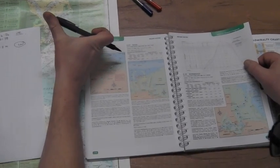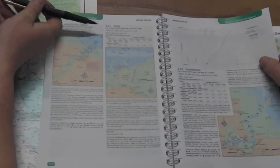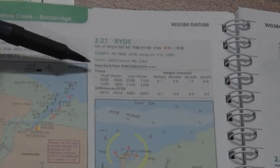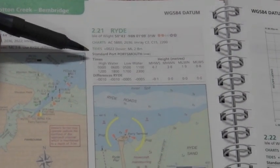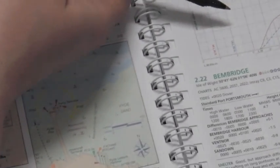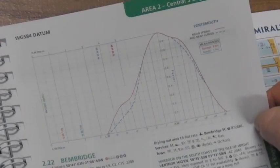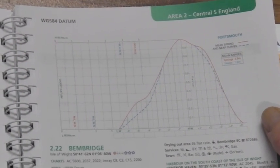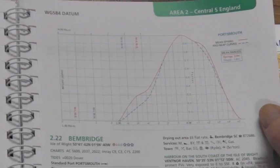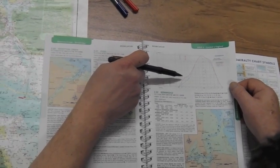We've got another useful bit of information here. It's telling us that the standard port for calculating the tidal heights is Portsmouth. And each standard port has a tidal curve — this is the tidal curve for Portsmouth. It would be a very thick book if they produced a curve for every single smaller harbour and port, so for smaller places like Ryde it will reference a major port, which is Portsmouth.